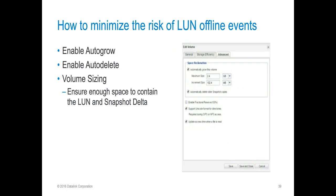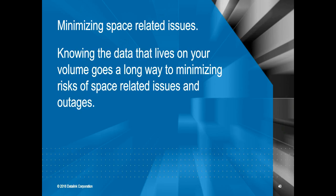So how do we minimize the risk of a LUN offline event? We have a couple of options that NetApp has provided: Auto-Grow and Auto-Delete. These can be configured from the Advanced tab on the Edit Volume screen. You can configure it to automatically grow and automatically delete. Auto-Grow allows us to define the maximum size to allow the volume to grow, as well as how large of increments it grows each time. Ensuring that you have the volume sized properly to contain both the LUN and snapshot delta for your volume is key. Minimizing space-related issues really comes down to knowing the data that lives on your volume — knowing the lifecycle and types of data is going to allow you to properly size and configure your volumes. If you do need assistance going through volume sizing exercises, we can work with your account team and get a Datalink solutions architect to assist you with that process.